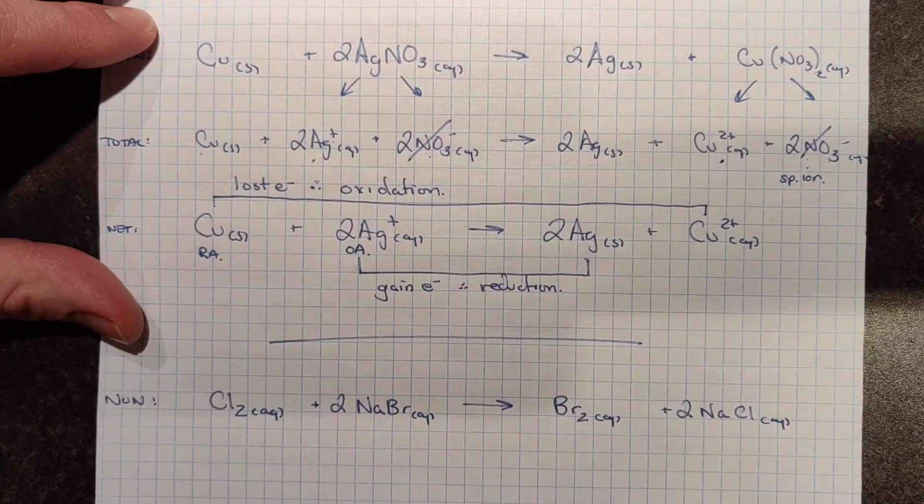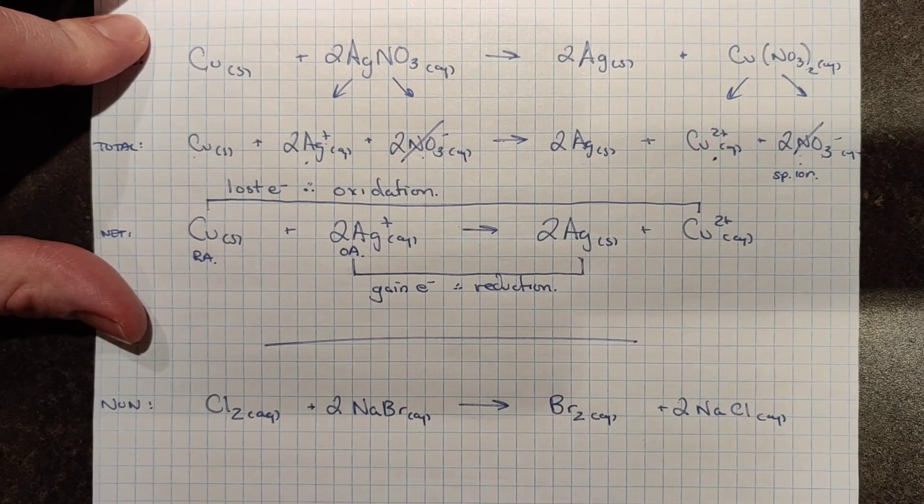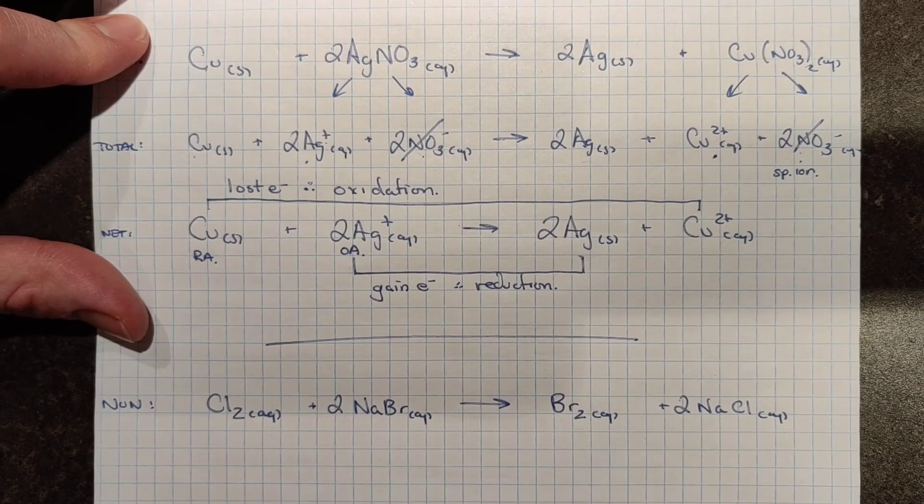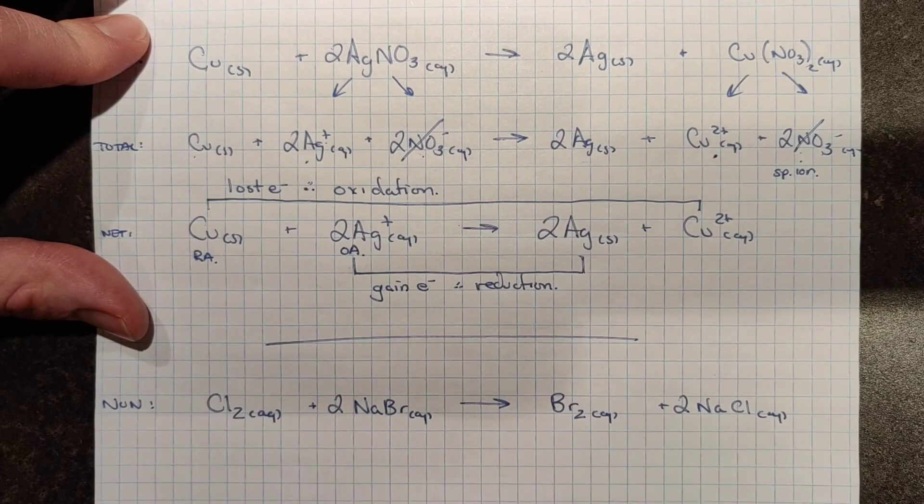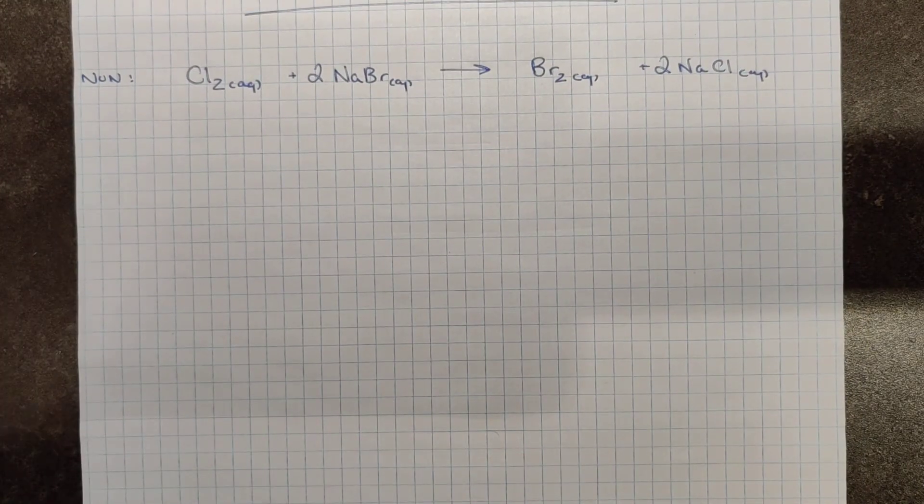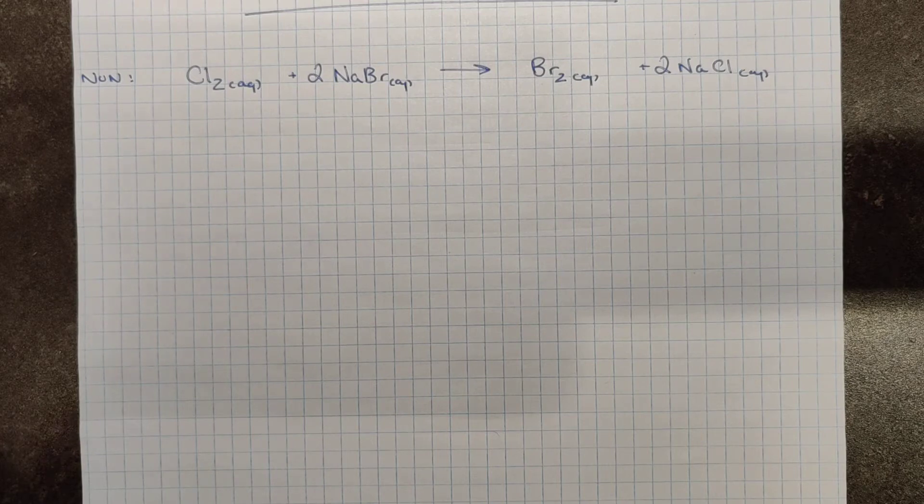What I'd like you to do is do this full process here. Remember you must dissociate any soluble ionic compounds and you must ionize any of the six strong acids which we don't have here. So pause the video now and see if you can come up with the total and the net ionic equations for this single replacement reaction and if you can try and come up with the oxidation and reduction for your net ionic equation. Pause that now. Good luck with it and I'll see you in a few minutes for the solution.